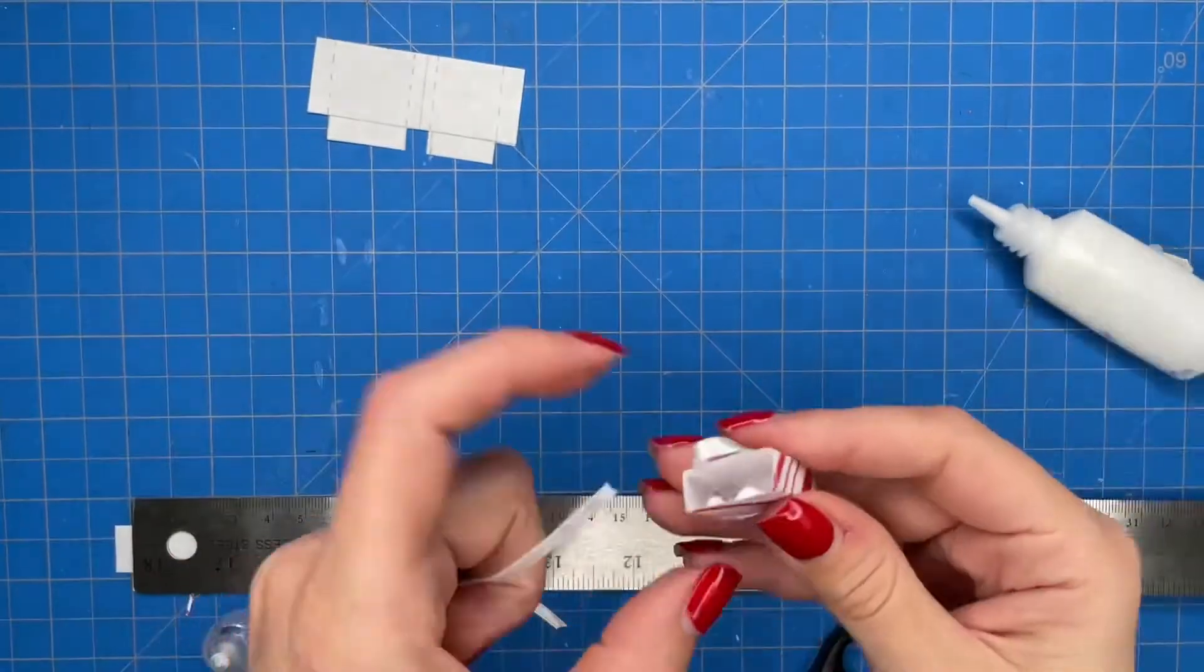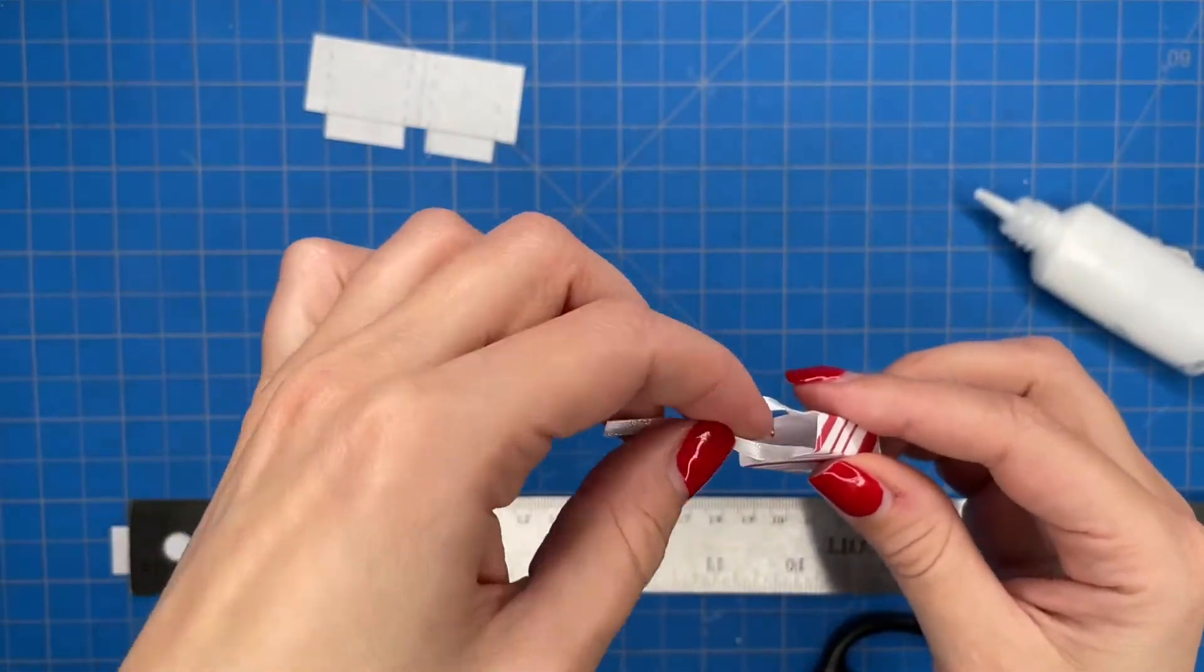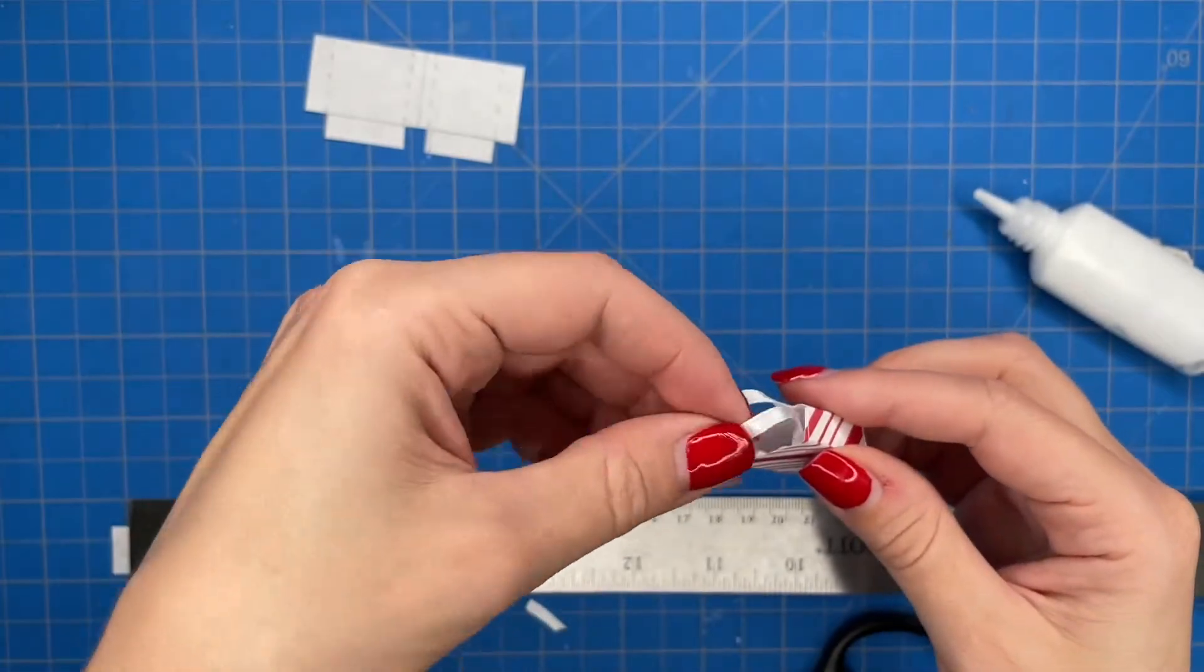And then I'm also going to add some ribbon to the other side, so it's the same exact process and I'm doing that so that I have two handles.